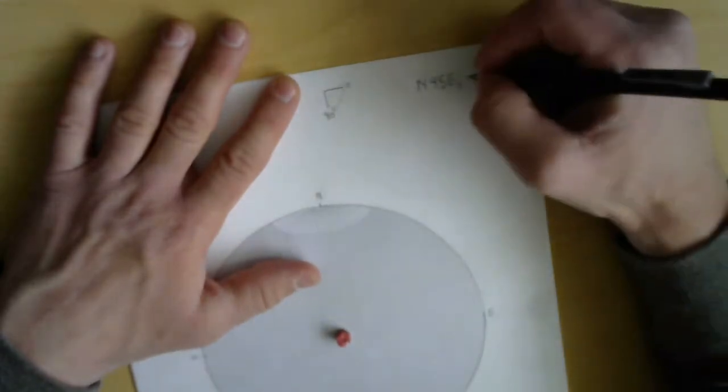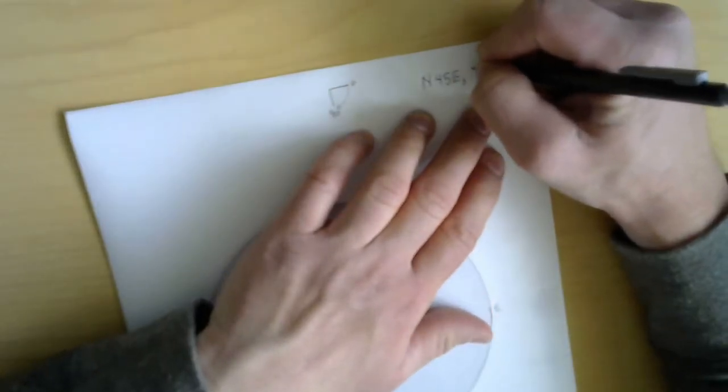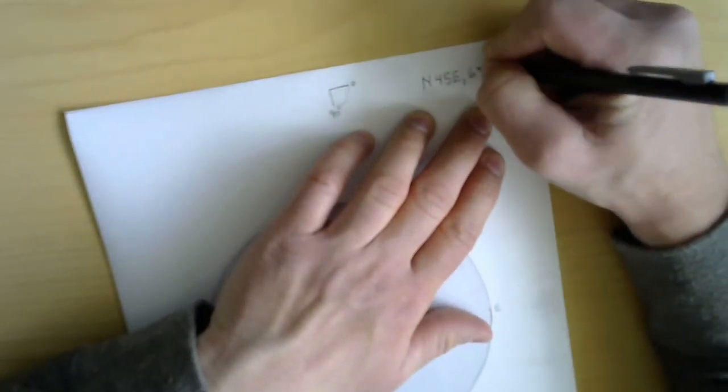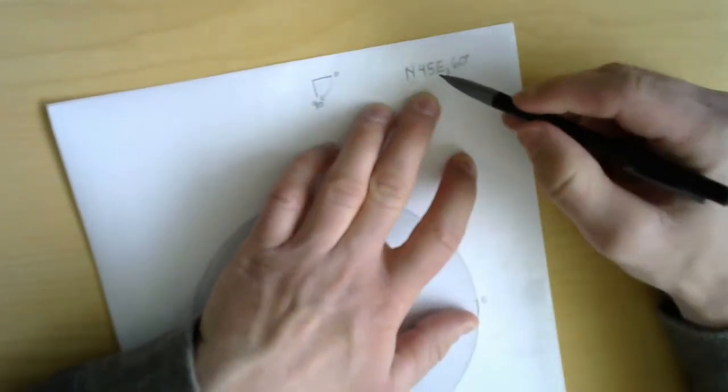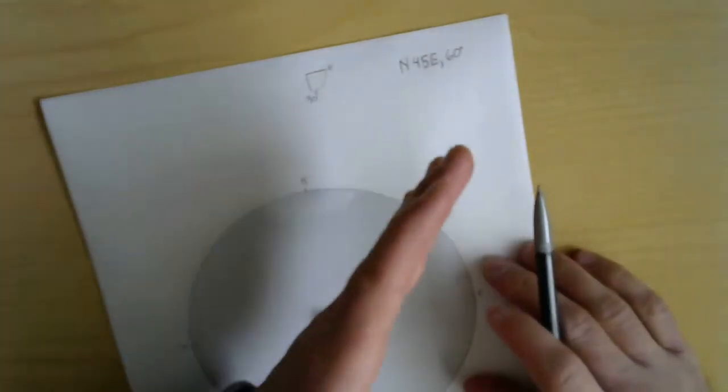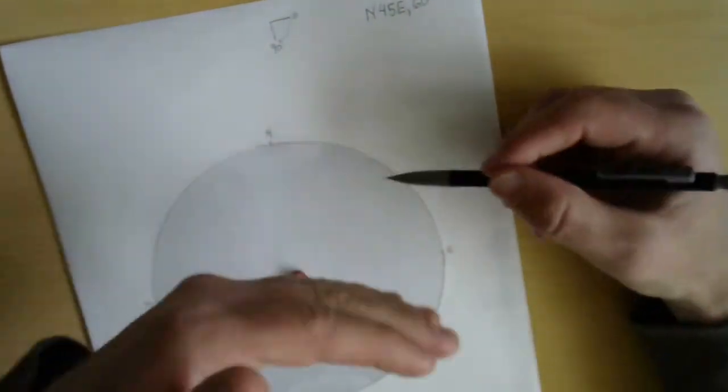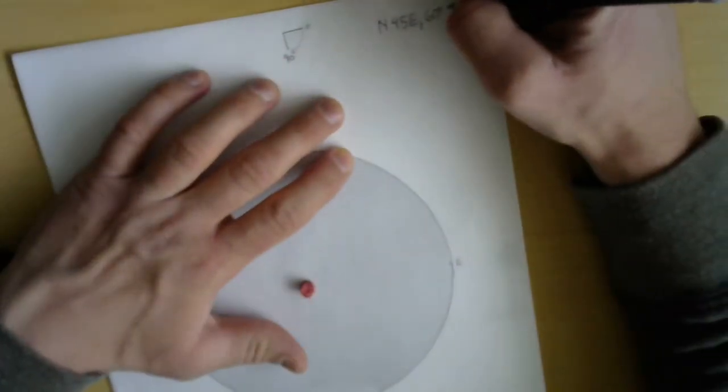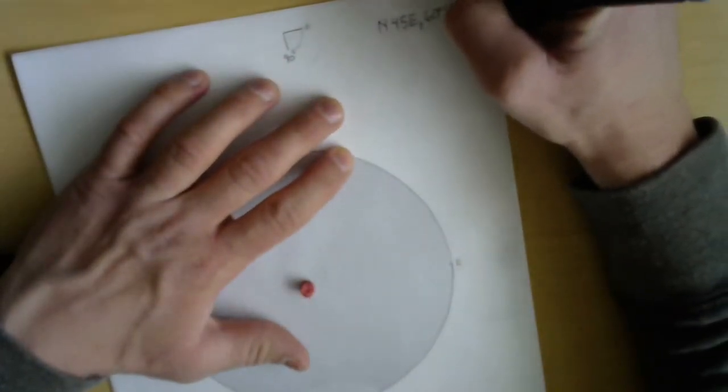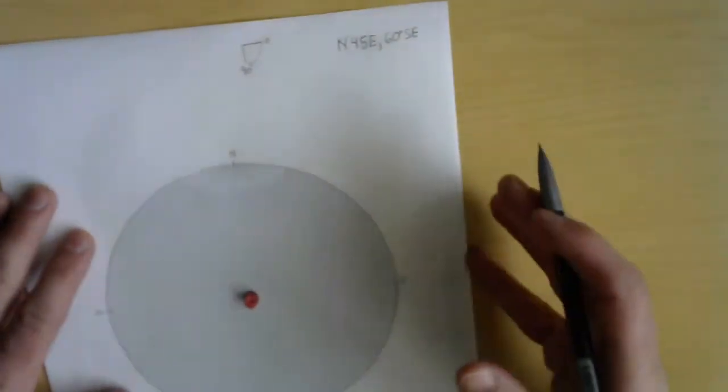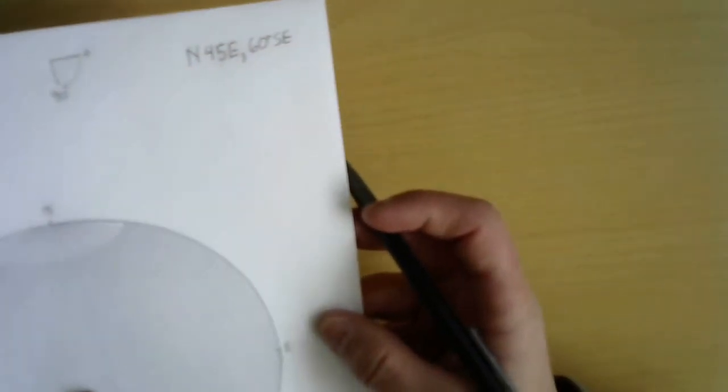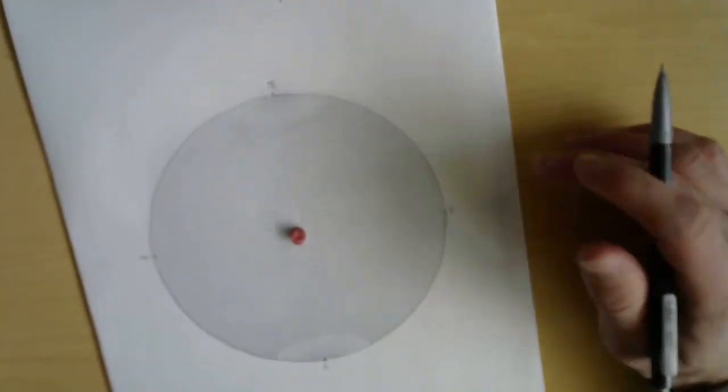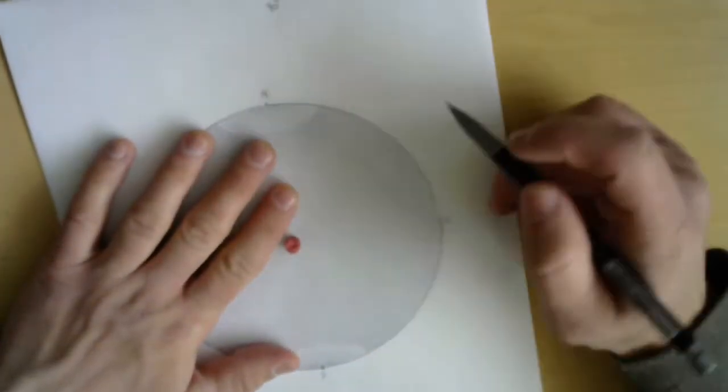North 45 east, and let's just make an arbitrary dip. Let's say this is a normal fault and we'll make it dip of 60 degrees. Because I said it has to be right hand rule, if we're going to plot in the northeast quadrant, that means dip is going to be in the southeast quadrant.